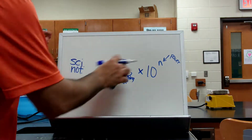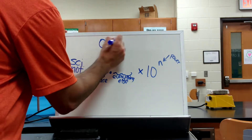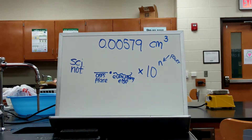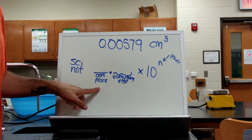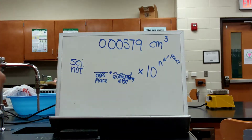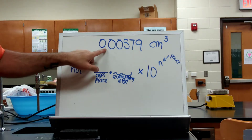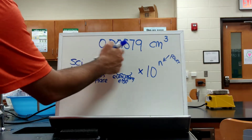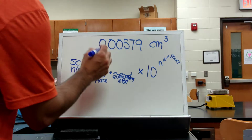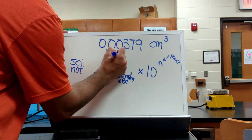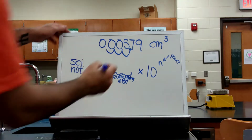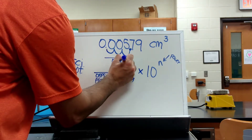So what if I have a number like 0.00579 centimeters cubed? I'm still keeping this template for scientific notation. I want at least a ones place, everything else, times ten to the nth power. My decimal point is over here. The first time I can get this decimal point to give me a number in the ones place is if that decimal point was after the five. So I'm going to move this decimal point over towards the five: one, two, three. I moved it to the right three times.